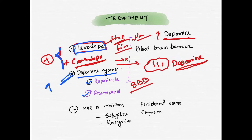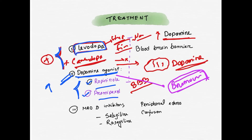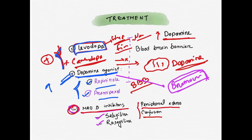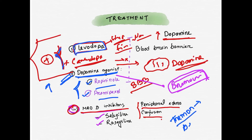Other treatment options include dopamine agonists such as ropinirole and pramipexole, as well as bromocriptine. These dopamine agonists mimic the action of dopamine. They can be particularly useful for managing tremors in Parkinson's disease.